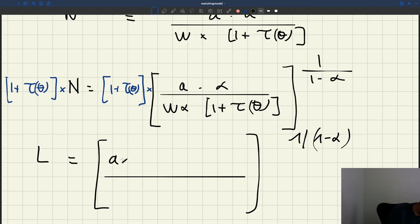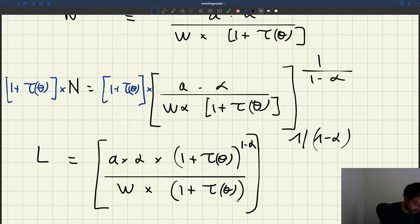So how do I do that? Well, I can have a times α and here I have a (1 + τ(θ)) to the power of 1-α. And here I have w times (1 + τ(θ)). Well, it's because once you take that (1 + τ(θ)) to the power of 1-α out, you have to exponentiate by 1 over 1-α. That will just give you a (1 + τ(θ)).